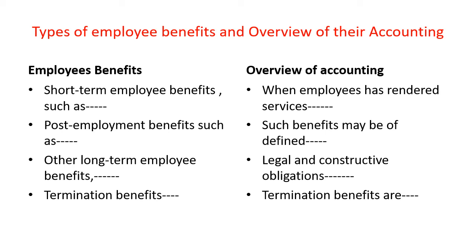Types of Employees' Benefits and Overview of Their Accounting Treatments. First, Short-term Employees' Benefits, such as: Wages, Salary and Social Security Contributions; Paid Annual Leave and Paid Sick Leave; Profit Sharing and Bonuses if payable within 12 months; and Non-Monetary Benefits such as Medical Care, Housing, Car, and free or subsidized goods or services for current employees. The accounting treatment overview: when an employee has rendered services in exchange for these benefits, the cost is debited to expenses.